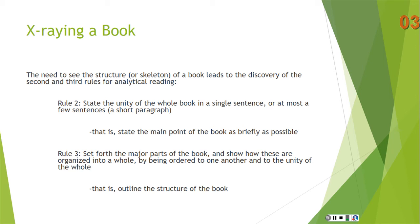Rule 3: set forth the major parts of the book and show how these are organized into a whole by being ordered to one another and into the unity of the whole — that is, you should outline the structure of the book. So you have a summary statement of the book, and then the structure of the book.